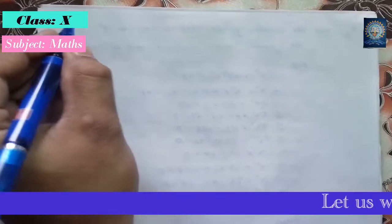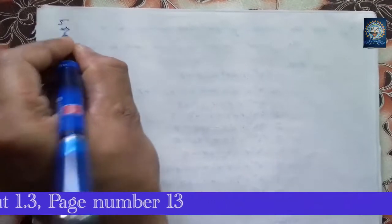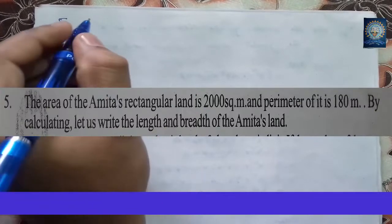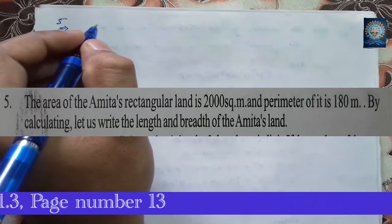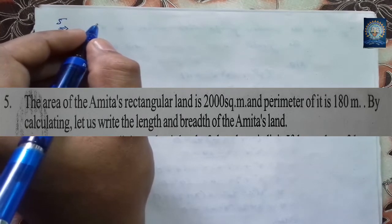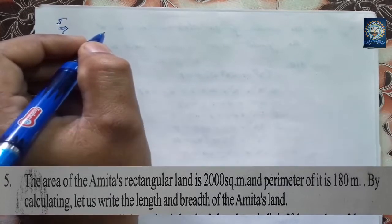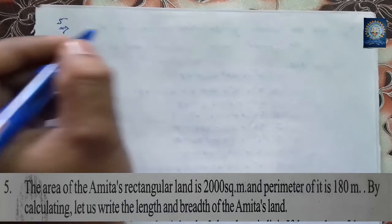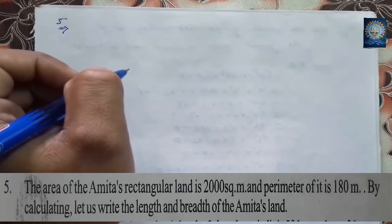Question number 5. The area of Amita's rectangular land is 2,000 square meters and the perimeter of it is 180 meters. We have to calculate the length and breadth of Amita's rectangular land. Area is 2,000 square meters and perimeter — the length of the boundary — is 180 meters.